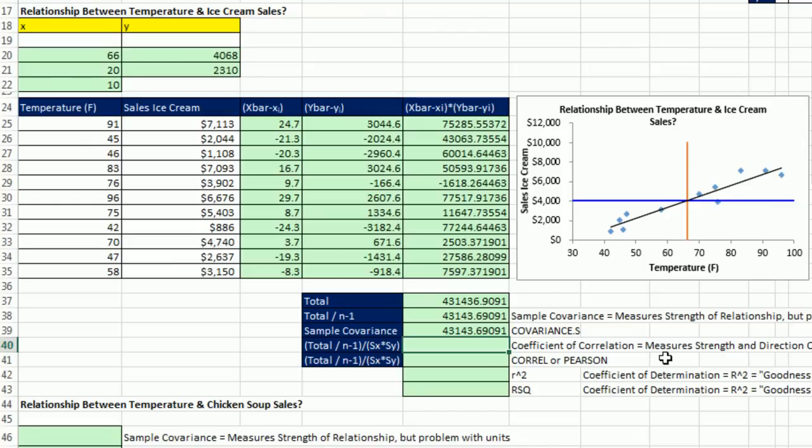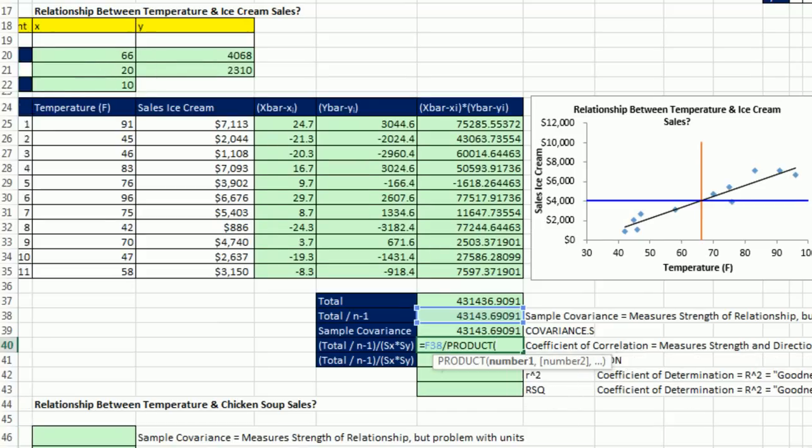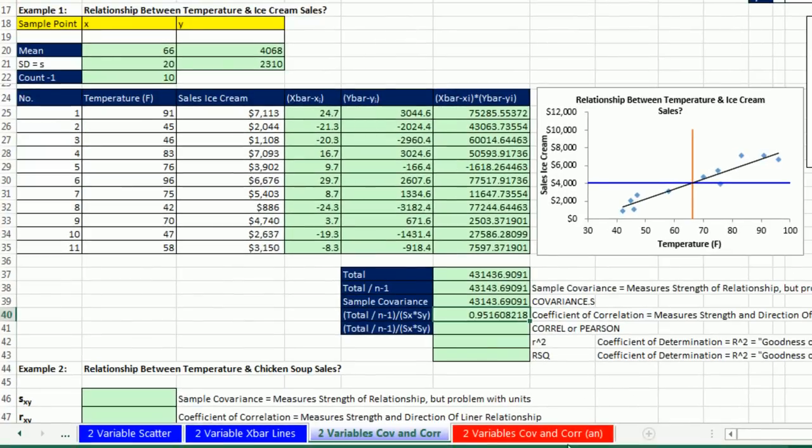Sample covariance measures the strength of the relationship but has problems with units. Coefficient of correlation will measure the strength and direction of the linear relationship. It is not causation though. Sometimes instead of coefficient of correlation, they call this r. So you ready? Equals, and I'm going to take that one we calculated longhand and divide it by. And now I need to multiply the two standard deviations. I could do it in parentheses, but I'm just going to use the product function. I can just highlight a range. And I have, if I scroll over so I make sure I don't mess it up, standard deviation s for both of these. So now you can see that it's got product, multiplying, Control, Enter.